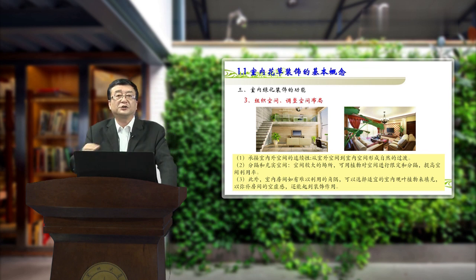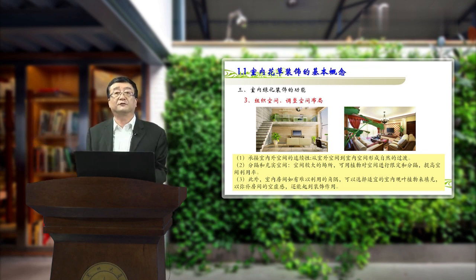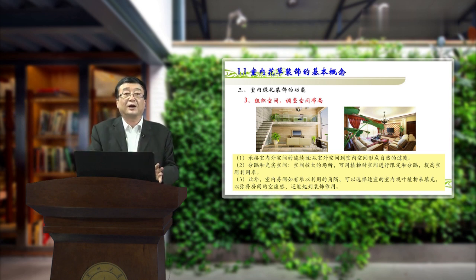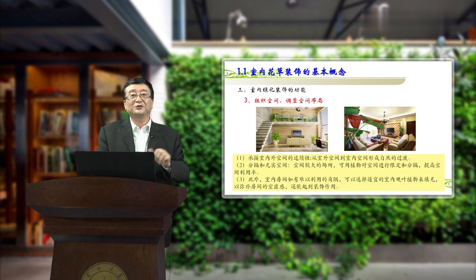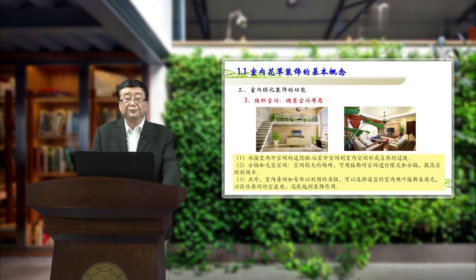绿化装饰还有第三个功能：组织和调整空间的布局。当我们摆了植物以后，可以承接室内外空间的连续性，从室外到室内形成自然的过渡。还可以充实空间，比如说空间很大的一间房间，我们可以把一些角落通过绿色植物来装饰充实。还可以分隔空间，在很大的空间摆放几盆植物，使得大的空间限定成不同的区域。